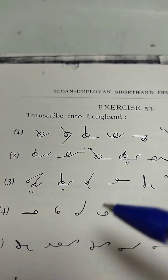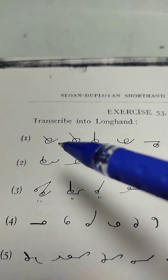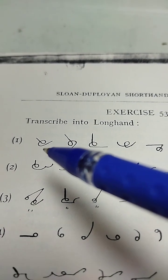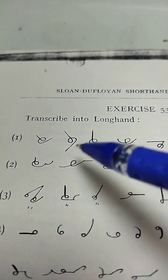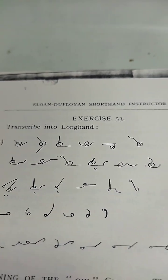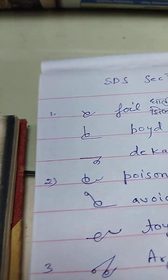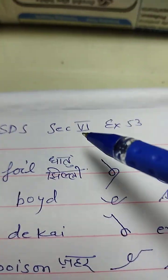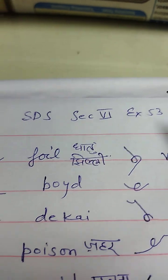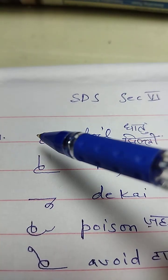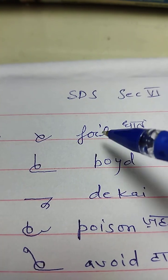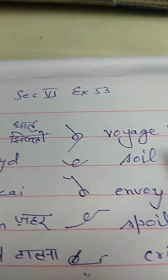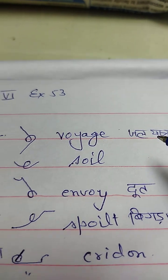We have to write in Longhand. This is Foil — Dhatu Chilli. Voyage — Jalyatra. In our copy we see: Sloane Duployan Shorthand, Section 6, Exercise 53. Foil, Voyage.